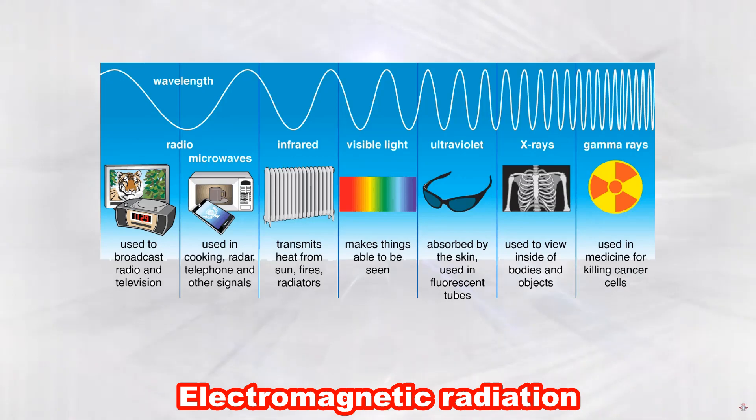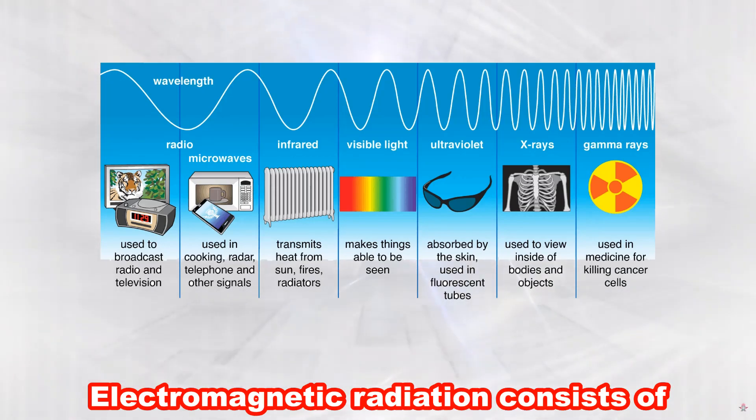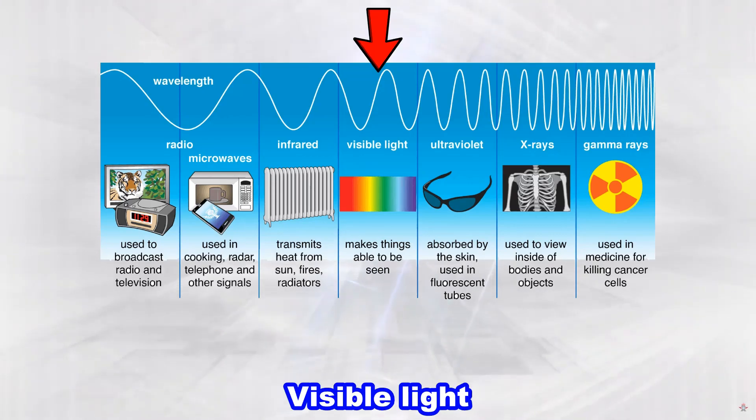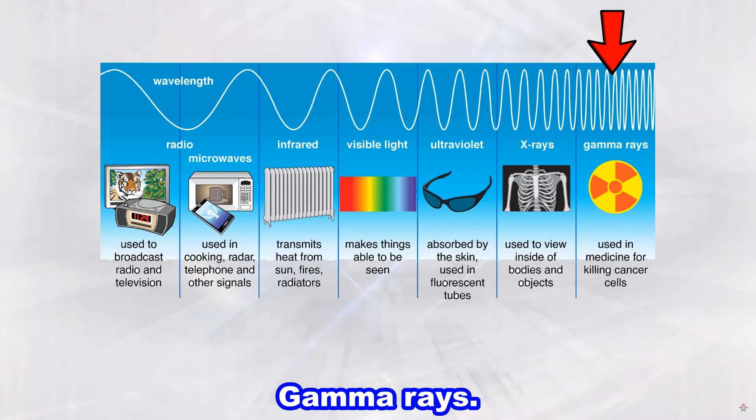Electromagnetic radiation. Electromagnetic radiation consists of radio waves, microwaves, infrared, visible light, ultraviolet, X-rays, and gamma rays.